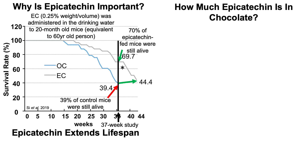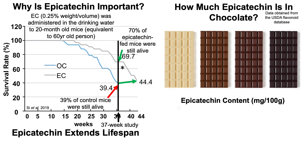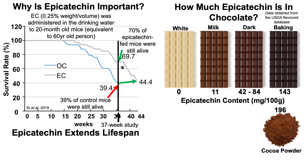How much epicatechin is in chocolate? Based on the USDA flavonoid database: white chocolate has no epicatechin content; milk chocolate has about 11 mg per 100 grams; dark chocolate has 42 to 84 mg per 100 grams; baking chocolate has 143 mg per 100 grams. Cocoa powder is the all-star with 196 mg of epicatechin per 100 grams. All of these are processed versions of the whole food — cocoa beans. To get epicatechin into his diet, the speaker grinds whole cocoa beans and mixes them with dates.